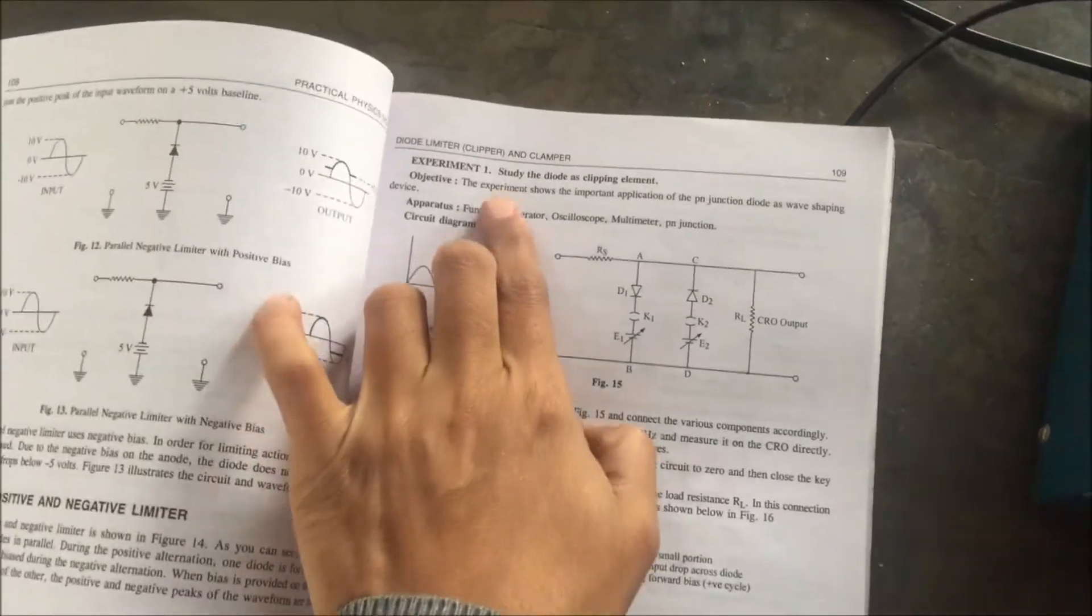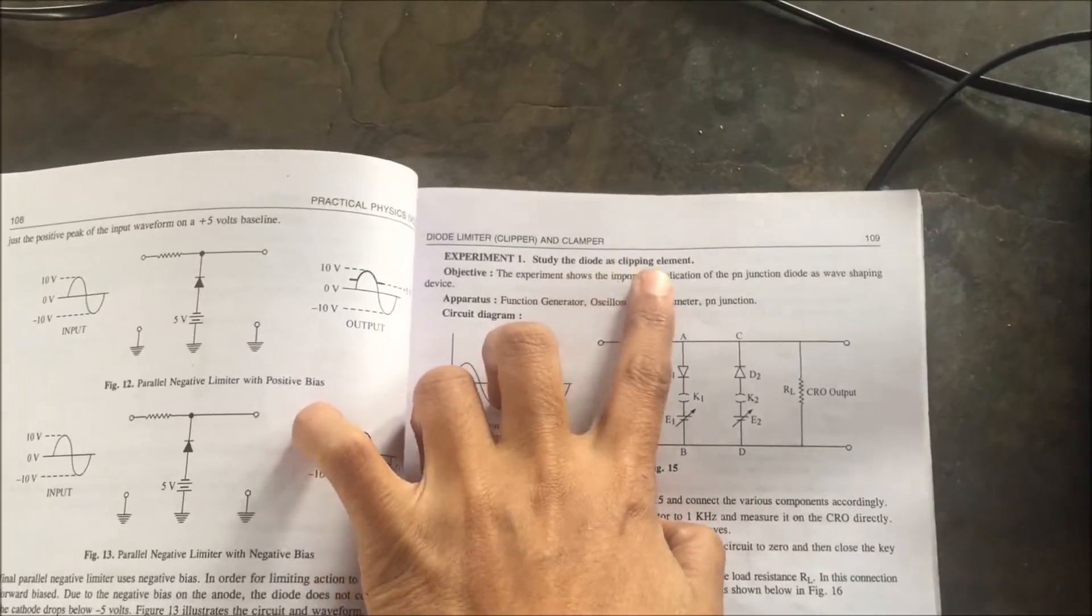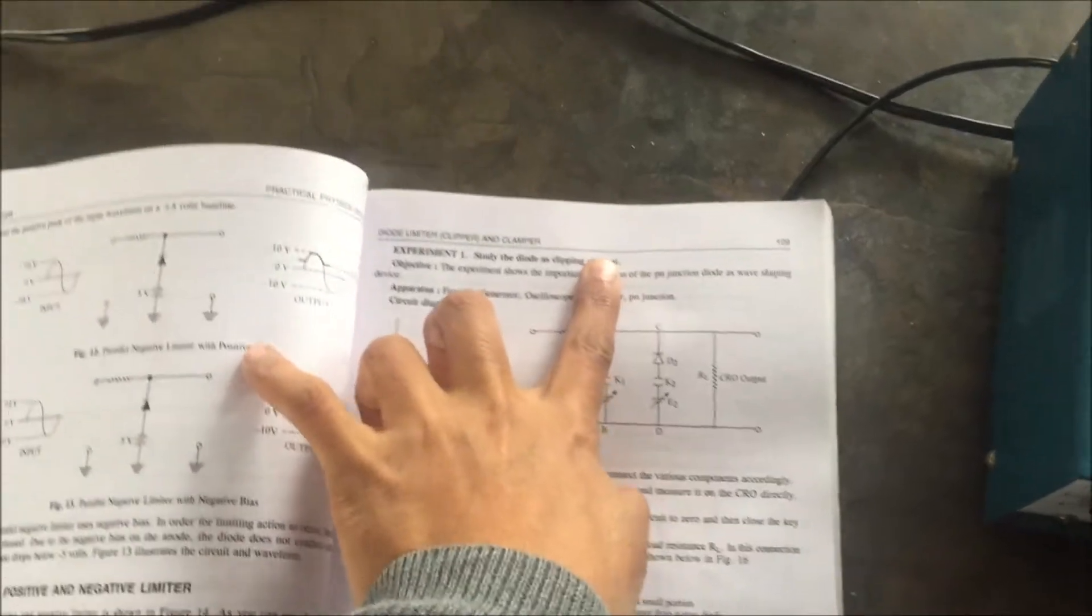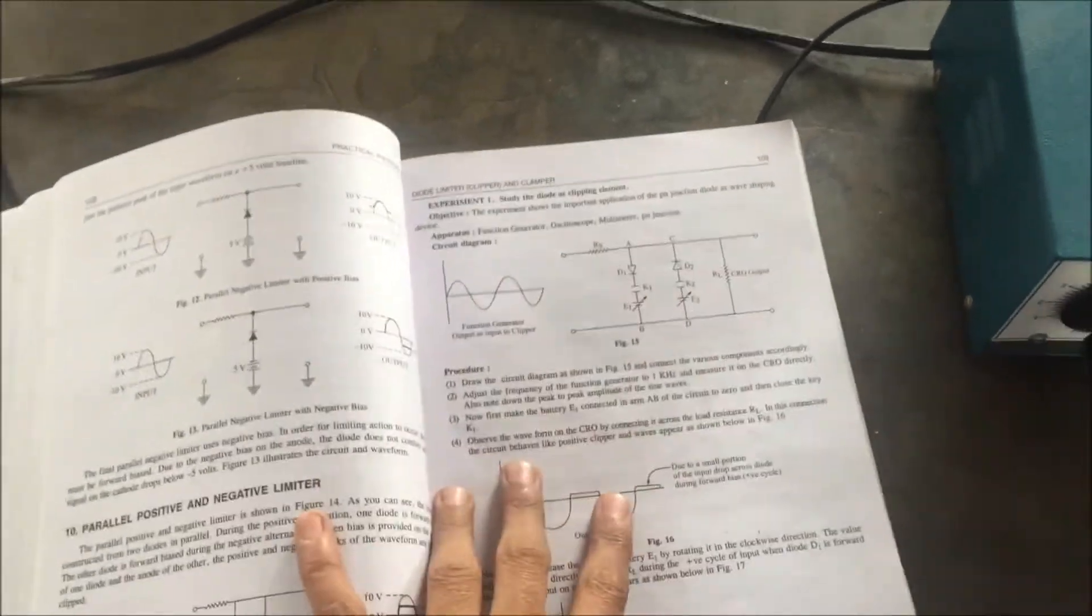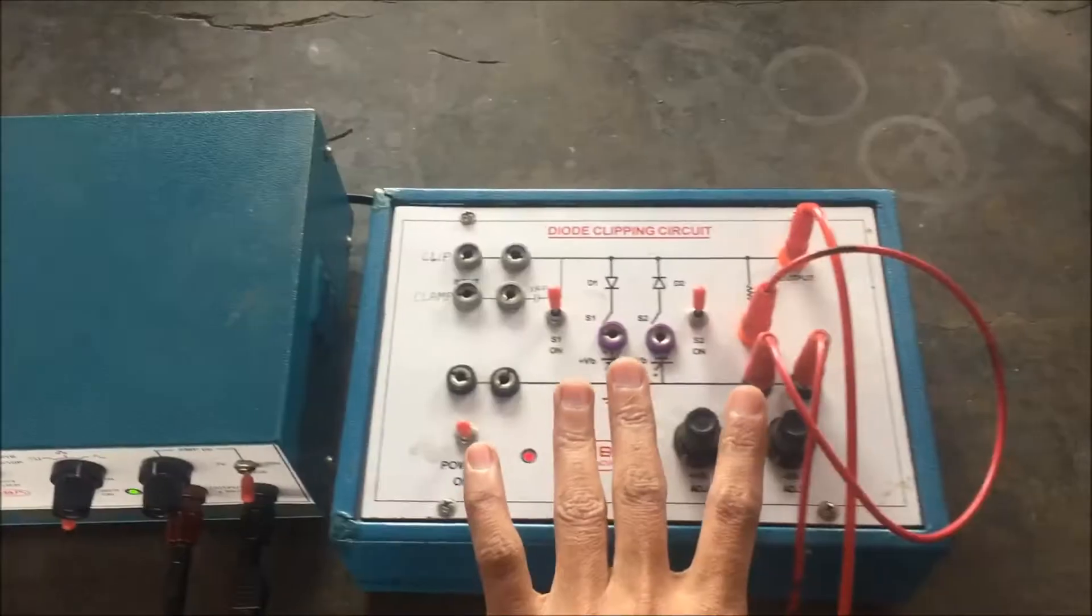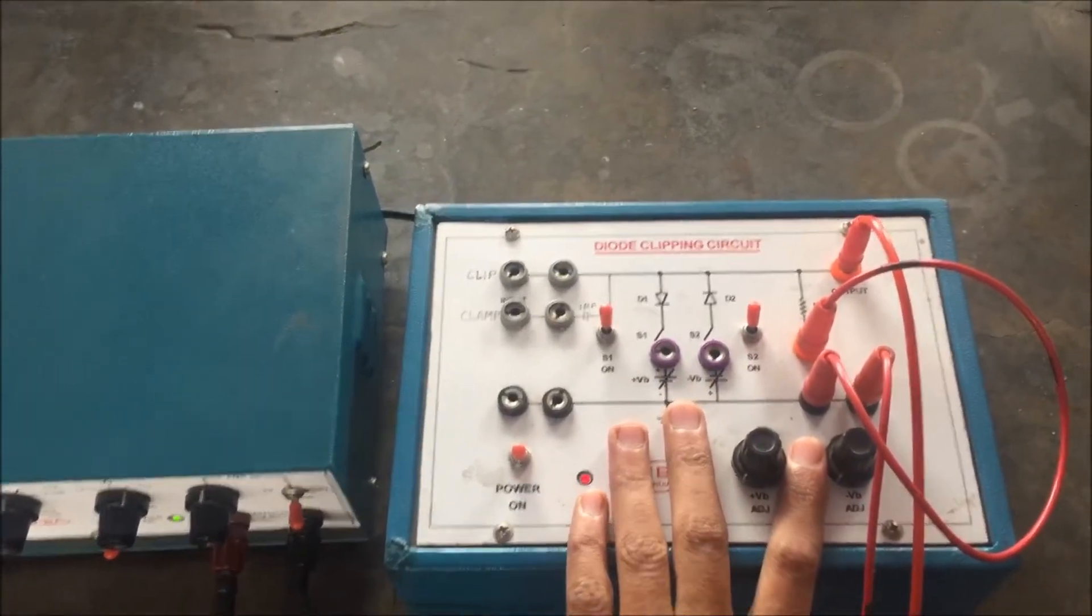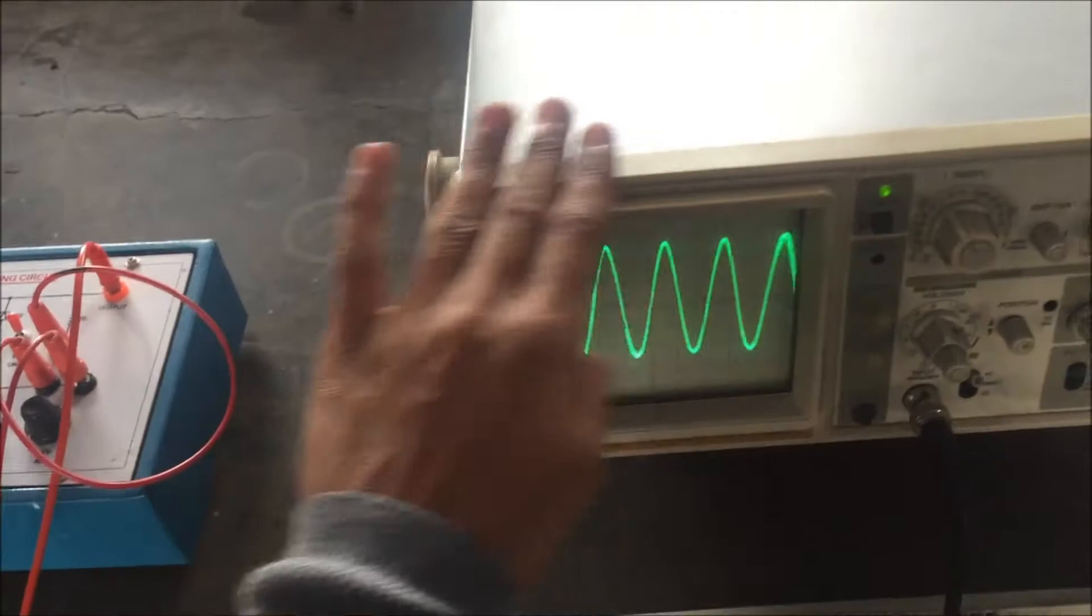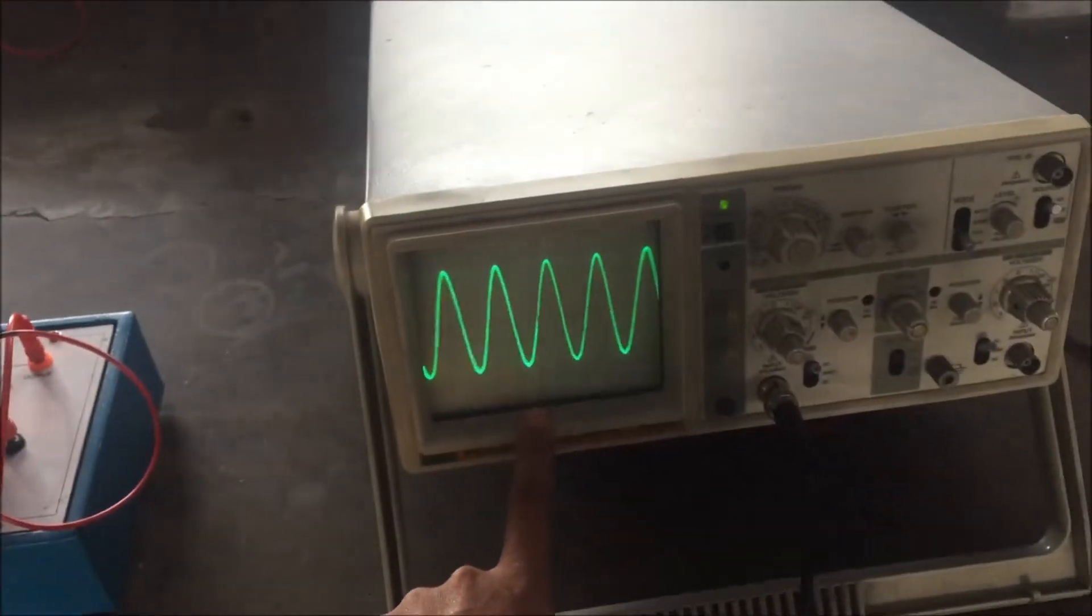Hello students, the experiment is to study the diode as a clipping element. So the equipment we need for this experiment are: this is a function generator, this is the diode clipping circuit, and this is a CRO, cathode ray oscilloscope.